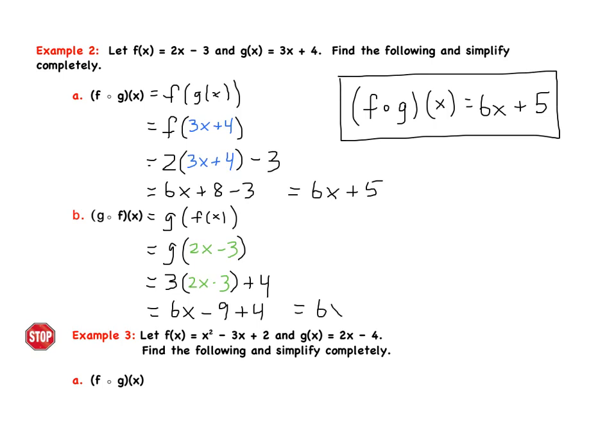And when we clean everything up, we get 6x - 5 this time. So g(f(x)) is equal to 6x - 5. And notice, we get two different answers for example a and b because order matters. We have to be very careful with our signs.